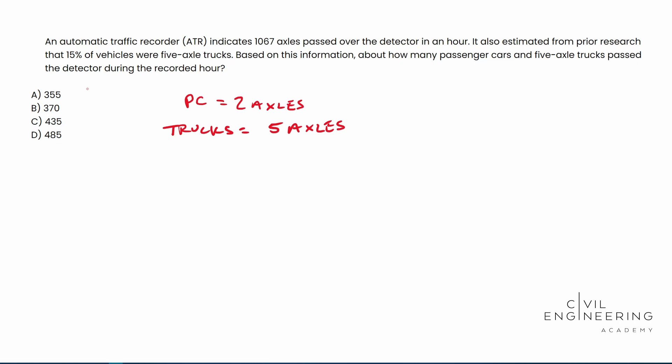All right, so now we need to follow our logic test. Well, it says we have 1,067 axles in total, and we know that there's two axles per passenger car, and we need to solve for the number of passenger cars and trucks, so what we need to do is derive our own equation. We have two axles per passenger car, so that's PC for short. Then we need to multiply that by the number of passenger cars.